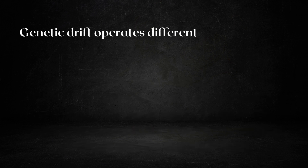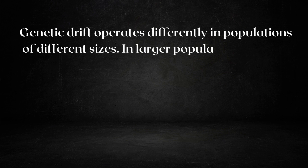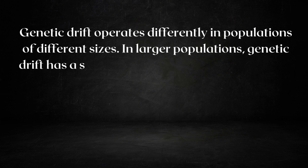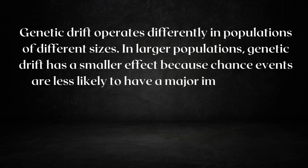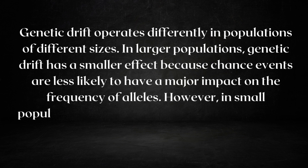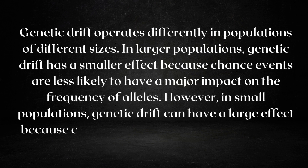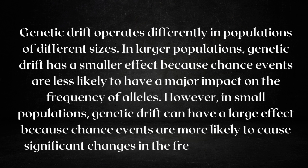Genetic drift operates differently in populations of different sizes. In larger populations, genetic drift has a smaller effect because chance events are less likely to have a major impact on the frequency of alleles. However, in small populations, genetic drift can have a large effect because chance events are more likely to cause a significant change in the frequency of alleles.